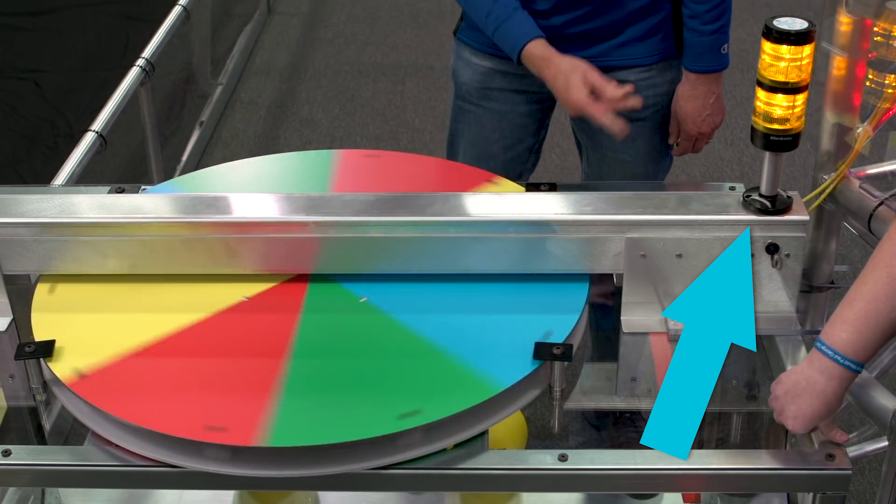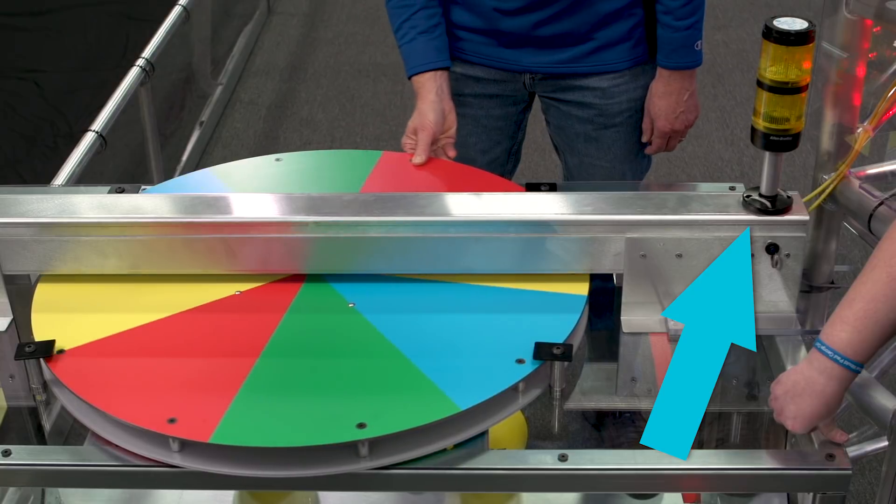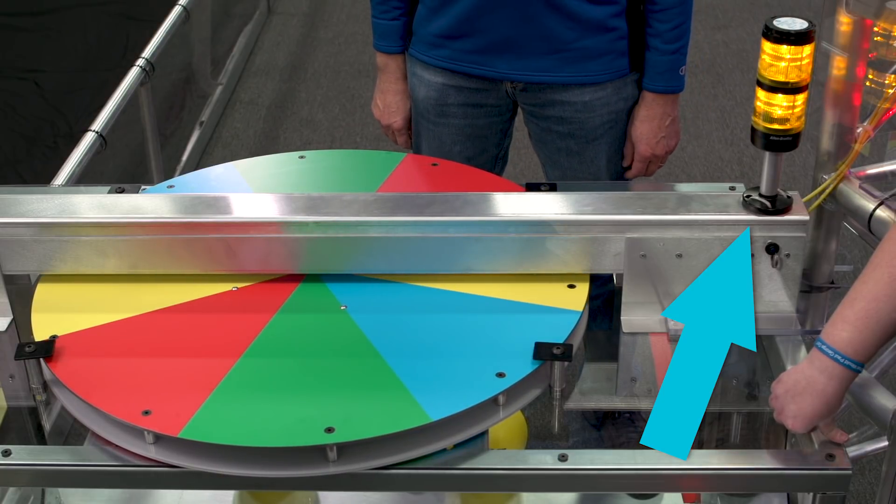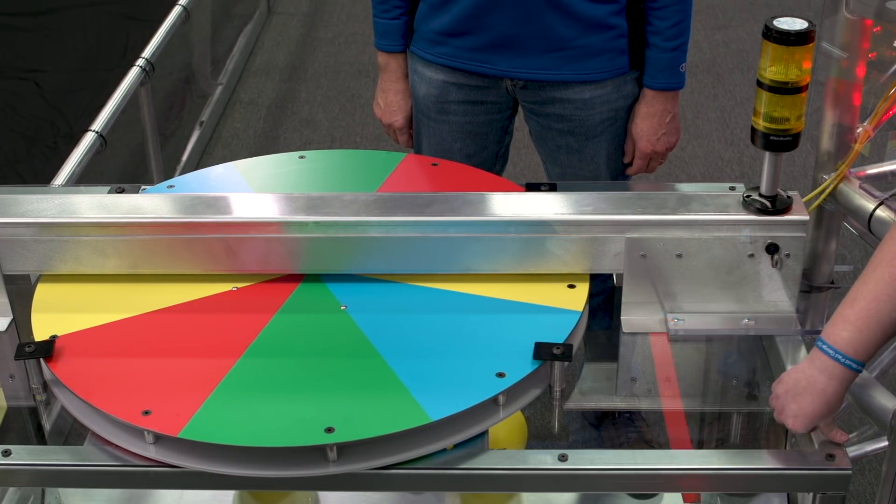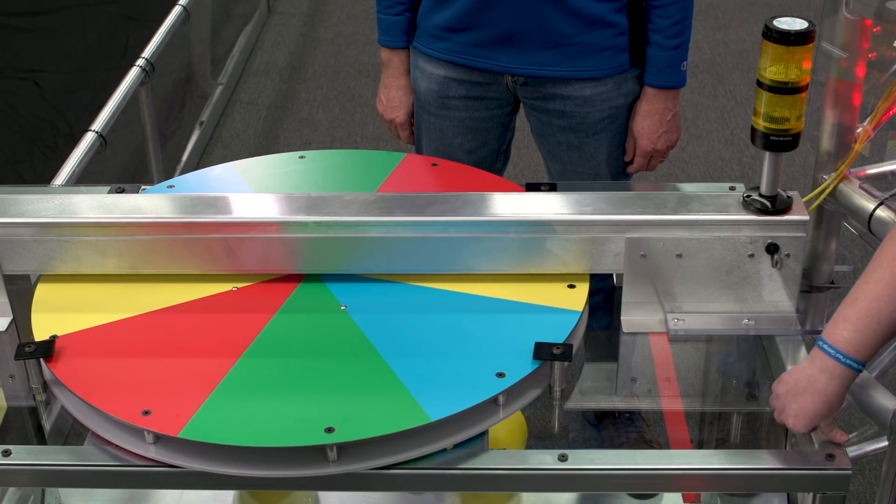The stack light will start flashing once the sensor has detected the minimum number of rotations. The flashing stack light will turn off when the sensor detects the same color for two seconds, and the rotation count is less than or equal to the maximum number of rotations.